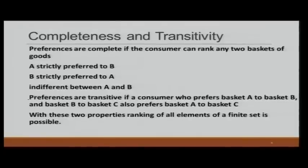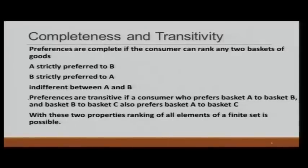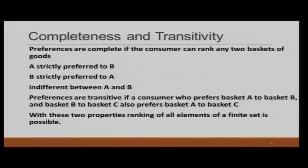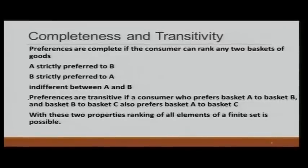You might be wondering whether we have covered all possibilities, but let me give you one scenario in which your preference would not be complete. Given a choice between A and B, when you are unable to decide — not because you like both equally, but because you are simply not clear about what you like — then your preference is not complete. So, for rationality, your preference has to be complete, meaning that given two options at a time, you should be able to decide which one you want.